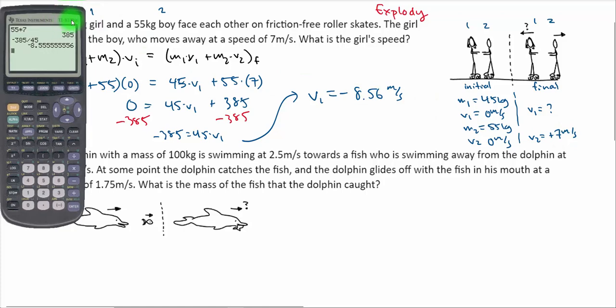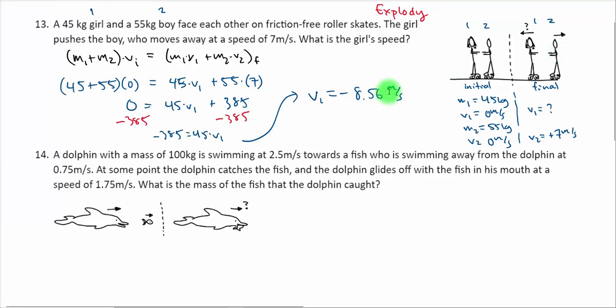All right, let's take a look at another question. Let's do number 14 here with the dolphin. It says a dolphin with a mass of 100 kilograms is swimming at 2.5 meters per second toward a fish who's swimming away from the dolphin at 0.75 meters per second. A chase is underway. At some point the dolphin catches the fish. The dolphin glides off with the fish in his mouth at a speed of 1.75 meters per second. What is the mass of the fish that the dolphin has caught? So we're solving for mass here, not velocity.